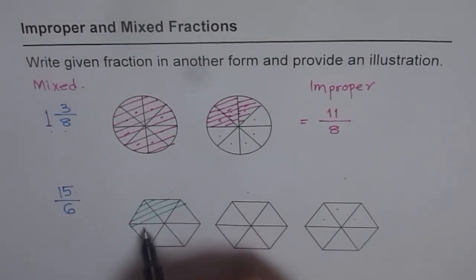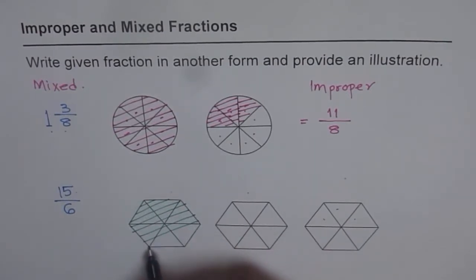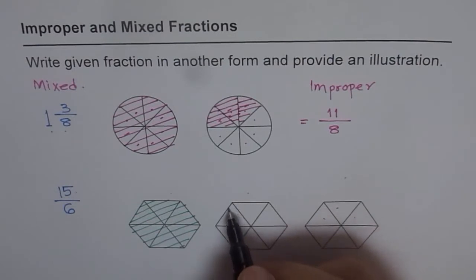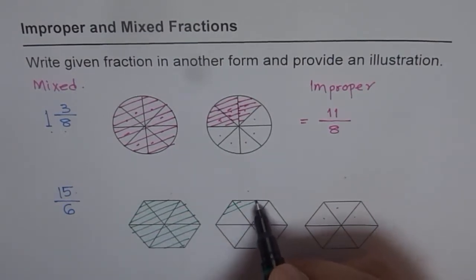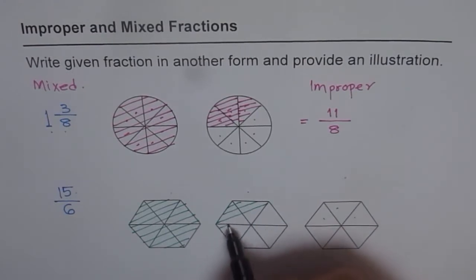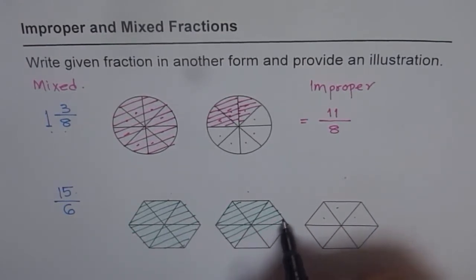So let's fill 2 of them. So if you fill 2 of them, you actually shade 12 triangles. Do you see that? 12 sixths. Each is 1 sixth. So if you shade 12 of them, then you are shading 12 sixths.